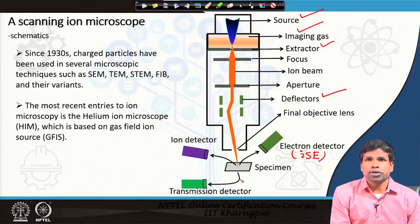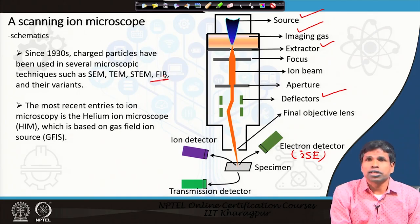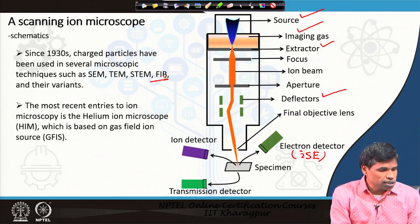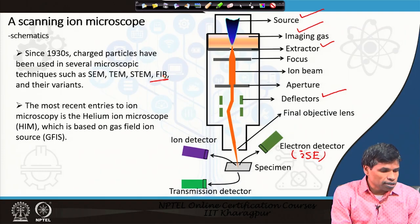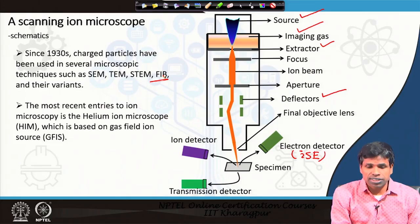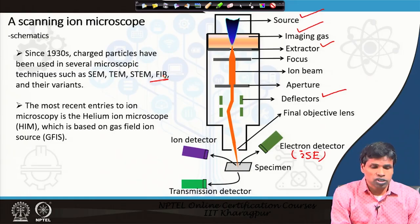Ions have been used in microscopes for a long time for different purposes, particularly for fabrication in focused ion beam systems, which are mostly attached to scanning electron microscopes. Multiple ions are used for fabricating devices, exposing resist, forming patterns, and drilling nanopores. Since 2007, after the commercialization of the helium ion microscope, it has also been extensively used for microscopy, generating 3-dimensional images of specimen surfaces.